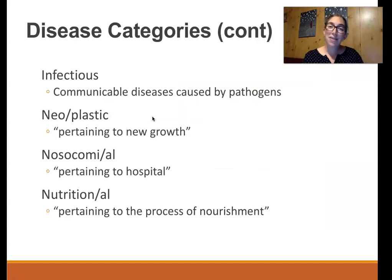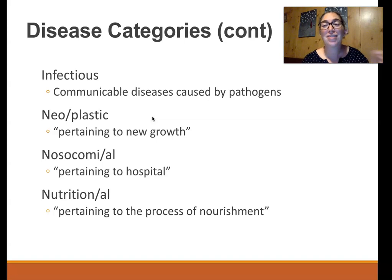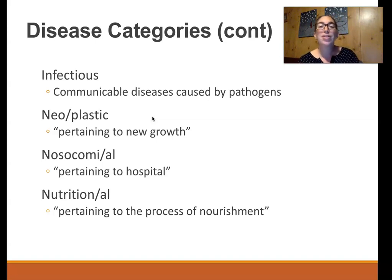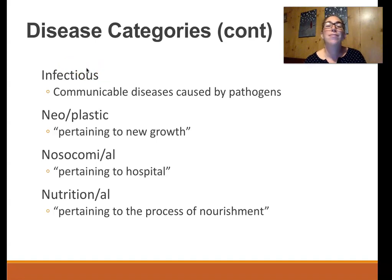An infectious disease is one caused by a microorganism like a virus or bacteria. A communicable disease is one that spreads from person to person. Probably about 98% of infectious diseases are also communicable, but some aren't. For example, you can get tetanus from a puncture wound where bacteria grow, and you can develop tetanus — but you can't give tetanus to somebody else. So that would be an infectious disease that's not communicable. For this class though, infectious and communicable are mostly synonymous.